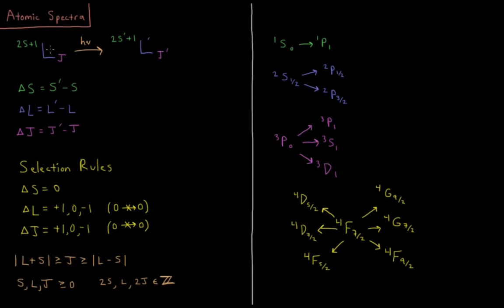So these are examples of the types of transitions allowed in atomic spectra, according to our selection rules, giving us the allowed values at which we can change our values of s, l, and j for our term symbol.